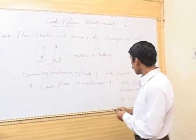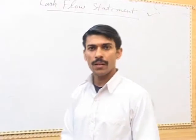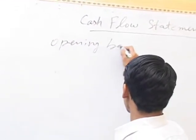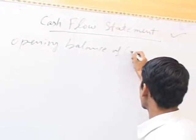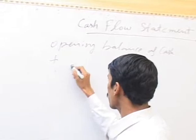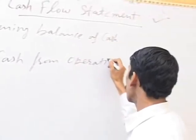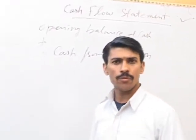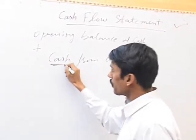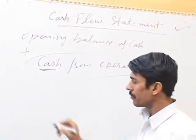For the cash flow statement, first of all we will calculate cash from operations. We will take the opening balance of cash and add cash from operations. This is just like net profit, but this net profit must be in cash, so we have to calculate it first.